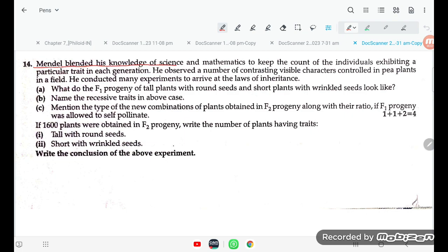Mendel blended his knowledge of science and mathematics to keep the count of individuals exhibiting particular traits in each generation. He observed a number of contrasting visible characters controlled in pea plants in a field. He conducted many experiments to arrive at the law of inheritance.